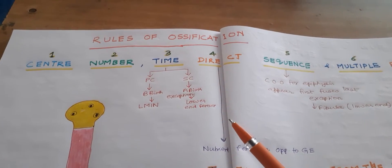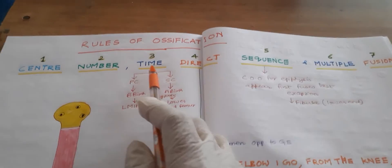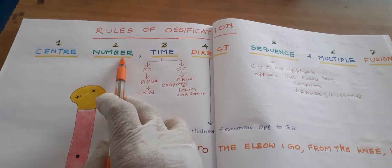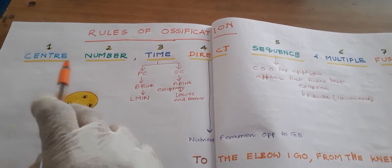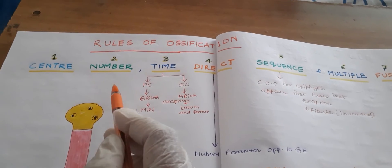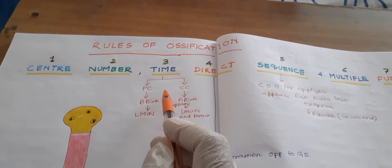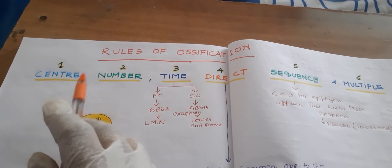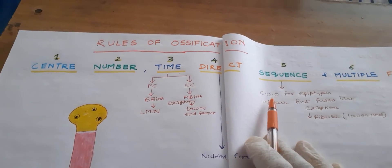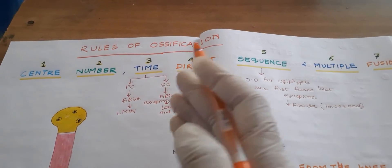Today I am going to tell you about the rules of ossification and how to memorize them — just remember one sentence. That sentence is: center, number, time, direct, sequence, multiple, fusion. These are the examination days, so remember: center number is where your center is. For example, center one is Navodaya Vidyalaya, center two is Kendriya Vidyalaya. Center number and timing — at what time you are reaching the center — that is it.